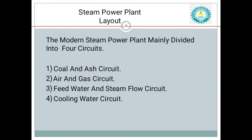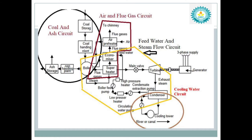We will now learn briefly about these four circuits. This is the modern steam power plant layout. The black color indicates the coal and air circuit, green color indicates the air and gas circuit, yellow color indicates the feed water and steam flow circuit, and brown color indicates the cooling water circuit.